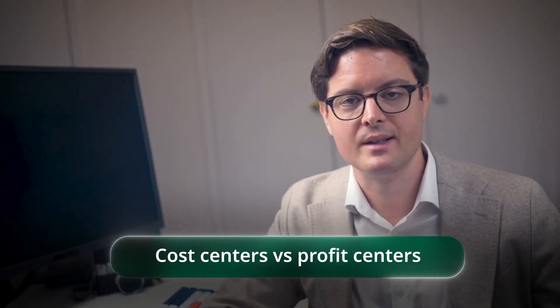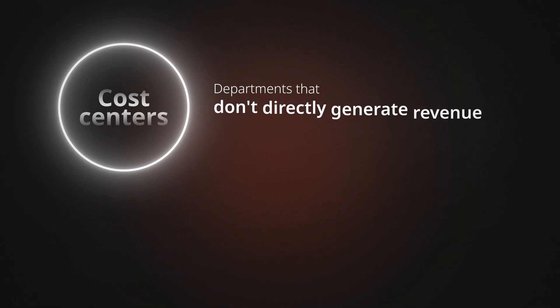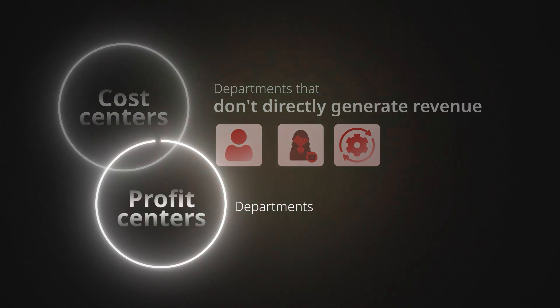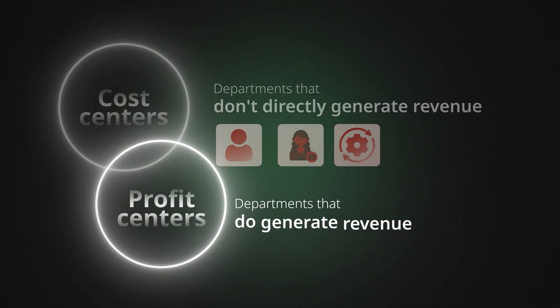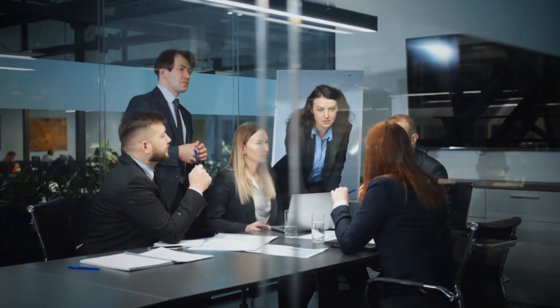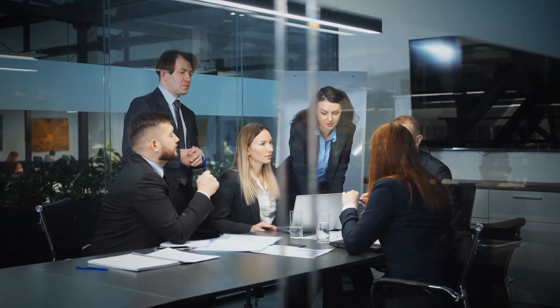The next level up is cost centers. Cost centers are departments that don't directly generate revenue — think finance, HR, operations. Profit centers are departments that do generate revenue, like your sales team. The whole point here is to track which expenses are directly related to revenue generation and which aren't.